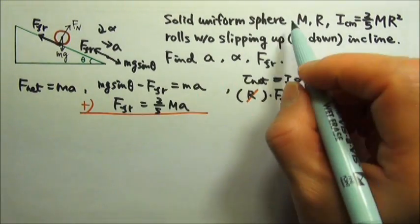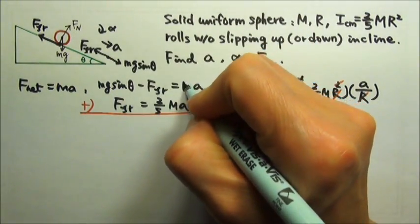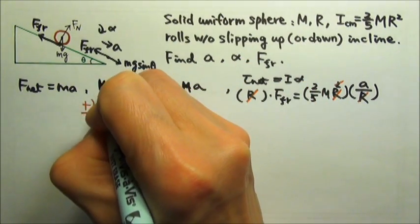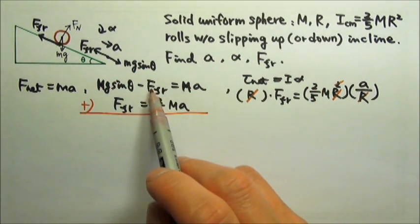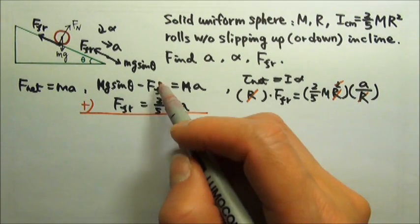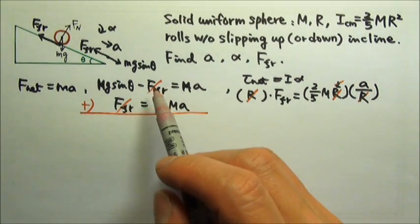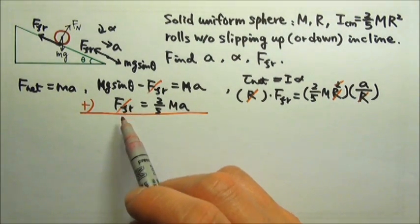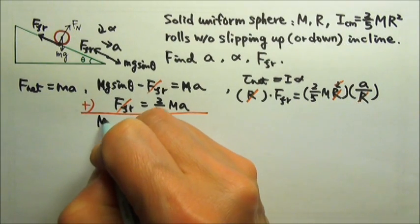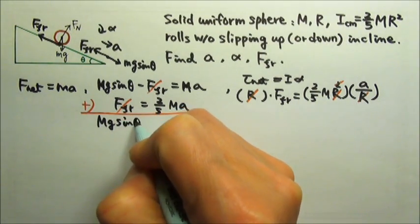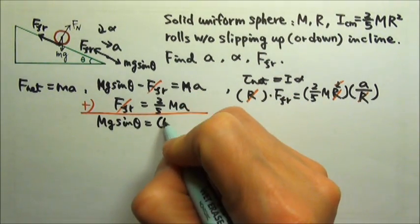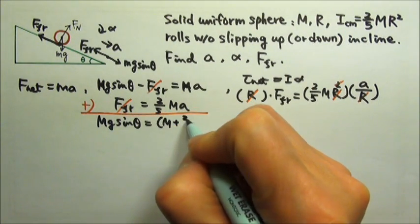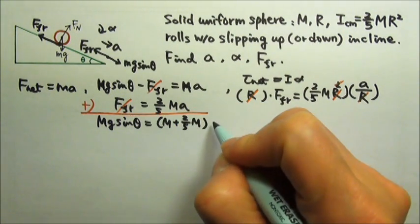Actually this is the same mass for the sphere, so I should have made them the same m. When I add them, this minus friction and friction, they would cancel, kind of like what we usually do to tension. So I get mg sine theta equals to m plus 2 fifths m times a.